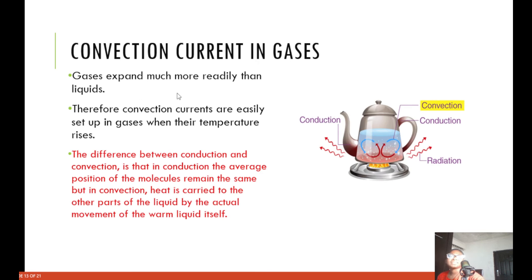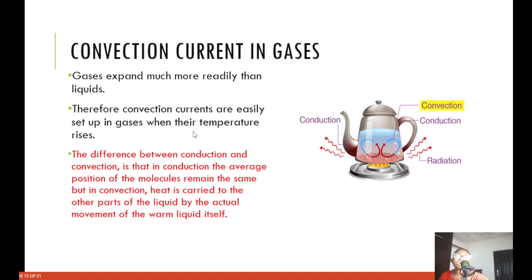Convection occurs in gases. Gases expand more readily than liquids because they are freer; therefore, convection currents are easily set up in gases when their temperature rises. The difference between conduction and convection is that in conduction, the average position of the molecules remains the same. But in convection, heat is carried to other parts of the liquid by the actual movement of the warm fluid itself.